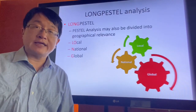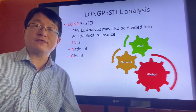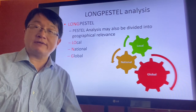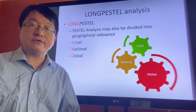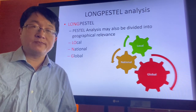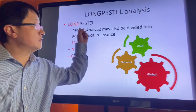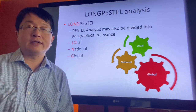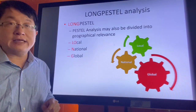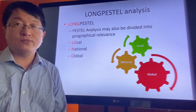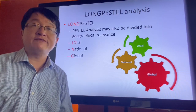So PESTEL analysis — P for Political, E for Economical, S for Social, T for Technological, E for Environmental, and L for Legal — covers the six aspects you need to consider. Some analysts may also extend these studies into a LONG-PESTEL analysis, where LONG means L for Local, N for National, and G for Global. So we could study these six factors across three dimensions, creating a matrix with altogether 18 cells to fill in.